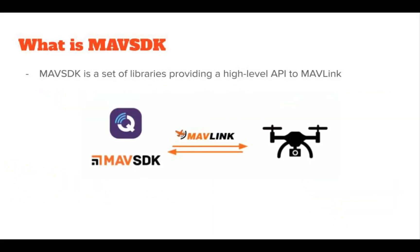By the official definition, MAVSDK is a set of libraries providing a high-level API to MAVLink. MAVLink is the protocol for communicating your drone with another drone, with QGroundControl or ground control station, or with any other companion or third-party hardware. You can get telemetry data, send commands, or control your drone. MAVLink is a very efficient and reliable protocol. We don't necessarily need MAVSDK to send commands — we can create MAVLink packets ourselves for takeoff, land, offboard modes — but it's complicated with hard syntax.